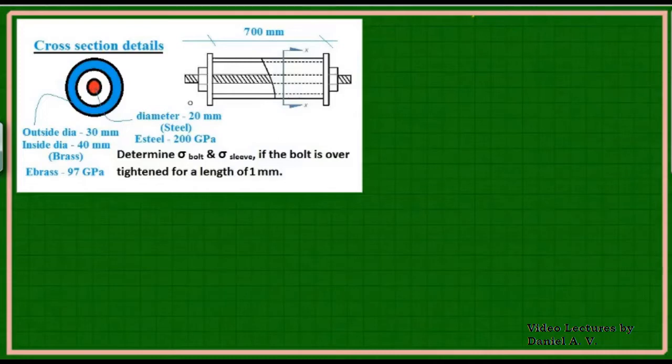In this problem, the cross-section has steel in the center with an outer diameter of 20 mm, a solid steel rod which is basically a bolt. There is a sleeve made of brass with 30 and 40 mm as the inside and outside diameters. The Young's modulus of brass and steel are given as 97 GPa and 200 GPa. The question asks when this bolt is over-tightened for a length of 1 mm, what will be the stress developed in the bolt and the sleeve?